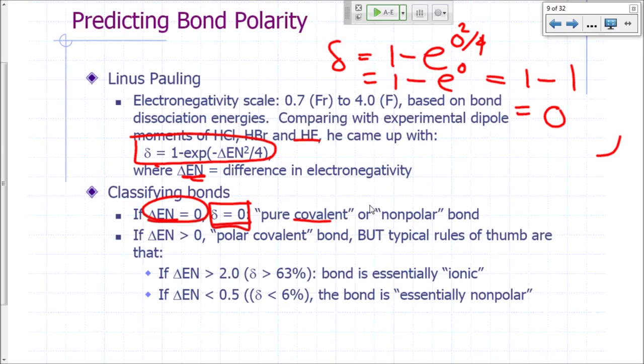So if you have two atoms with the same electronegativity, then we say the bond between those two atoms is pure covalent. Now, if the electronegativity difference is larger than 0, then you have what's called a polar covalent bond.